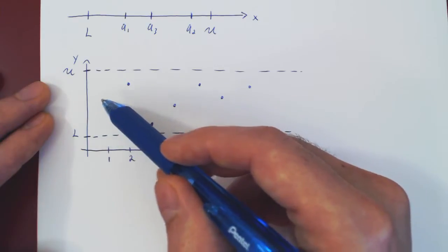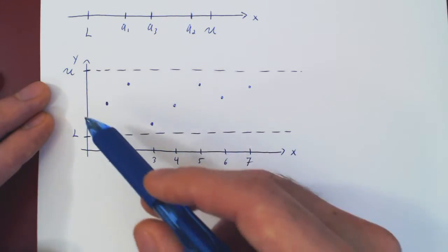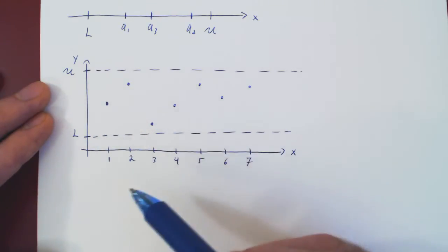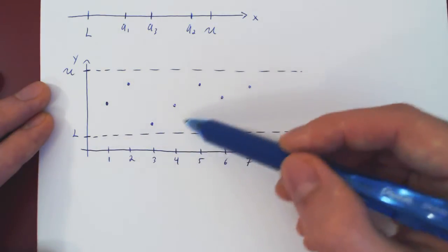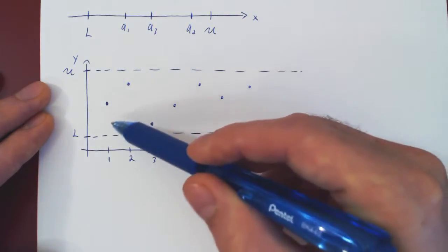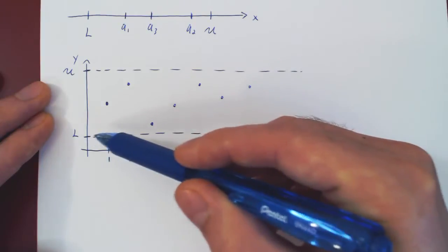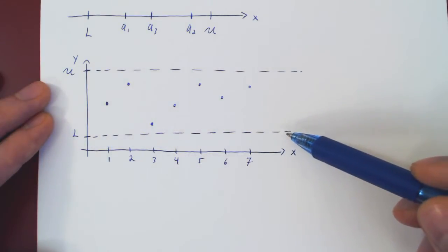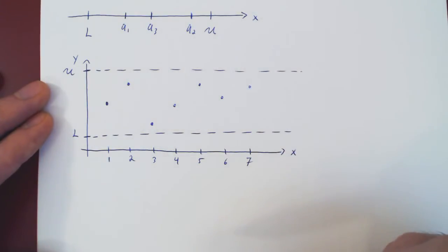when you sketch your sequence above each positive integer with the corresponding value of your sequence along the y-axis. So this is the value of a_1, the value of a_2, the value of a_3, and so forth. And every point in your graph, every value of your sequence, will lie between the two y-values L and U.